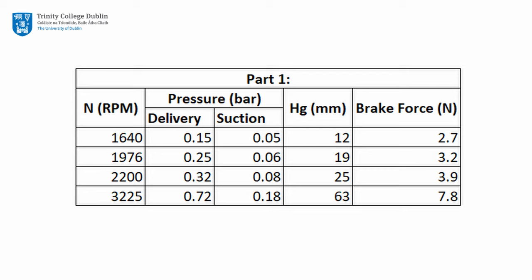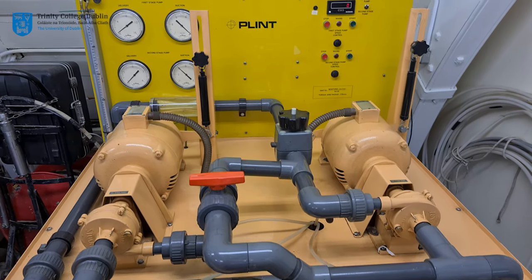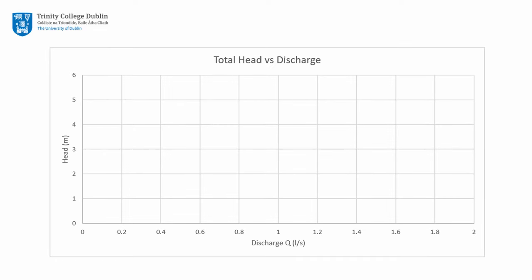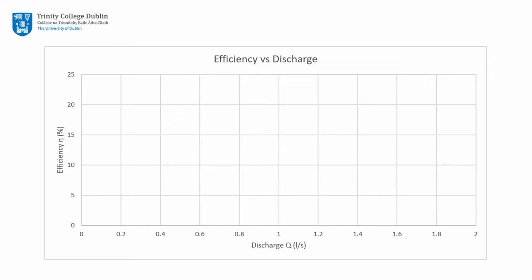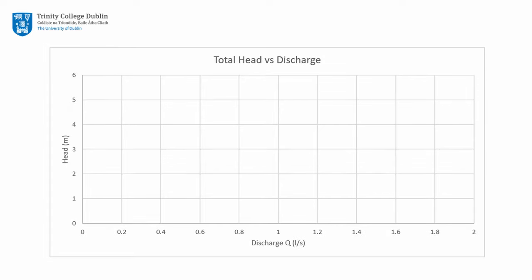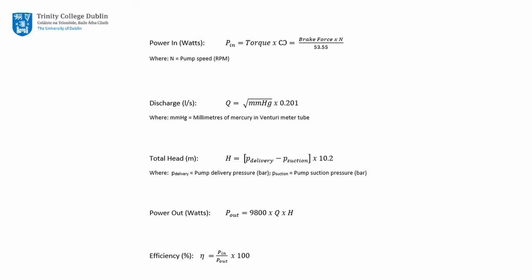Values for this experiment are tabulated on screen. Please follow the links on screen to download this data and all data for this lab session for use in your report. Please use this data to create the following plots: Total Head vs. Discharge, Power Output vs. Discharge, and Efficiency vs. Discharge. In addition, please plot the efficiency values on the Total Head vs. Discharge graph to produce isoefficiency curves. The formulae required to produce these plots are displayed on screen and can also be found in your lecture notes.